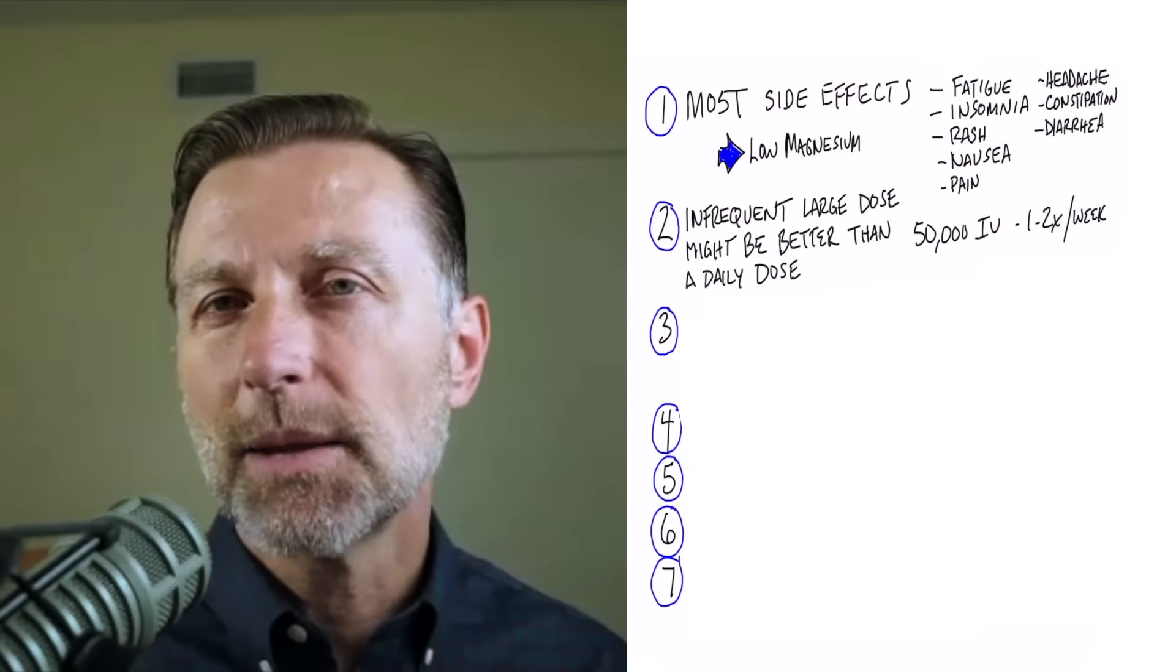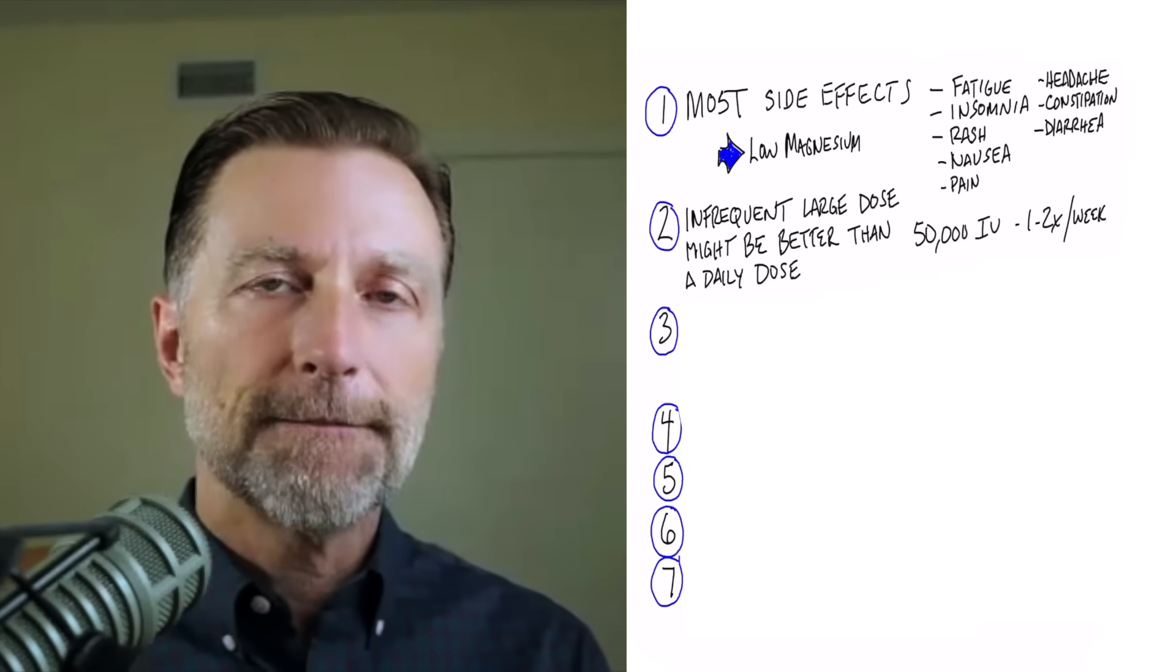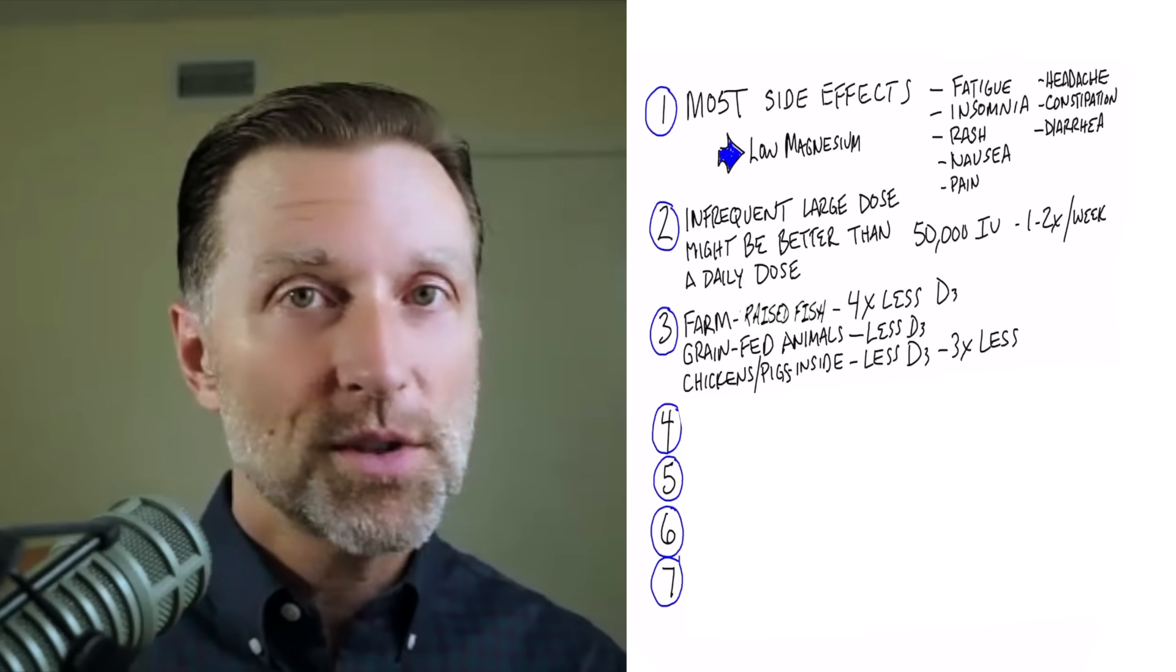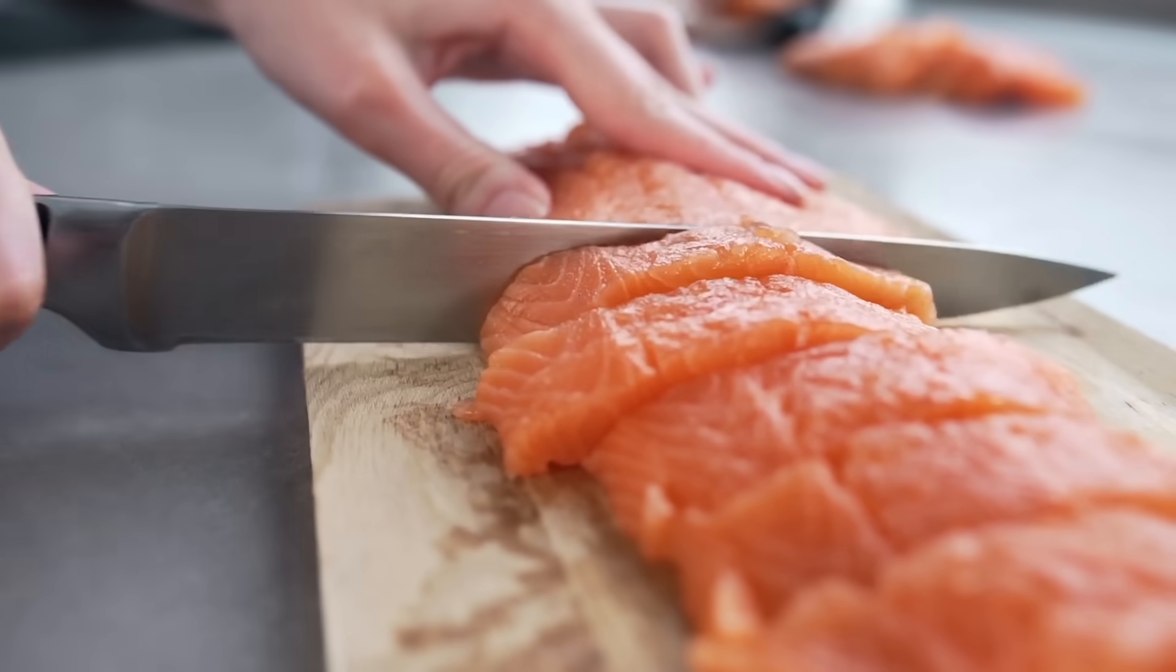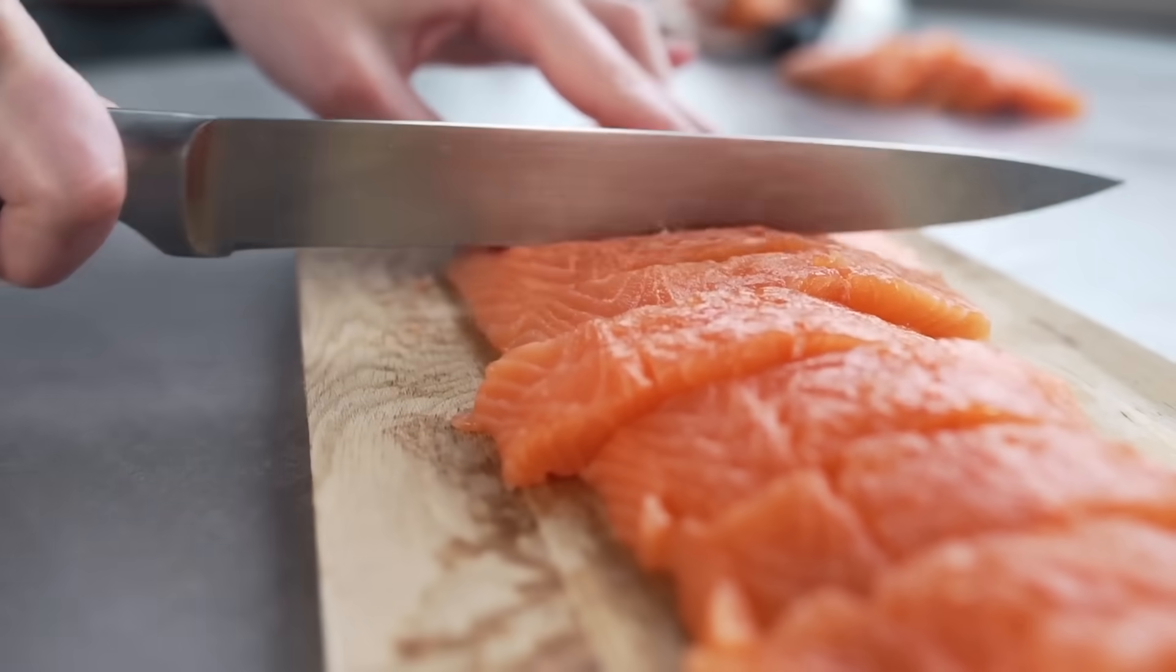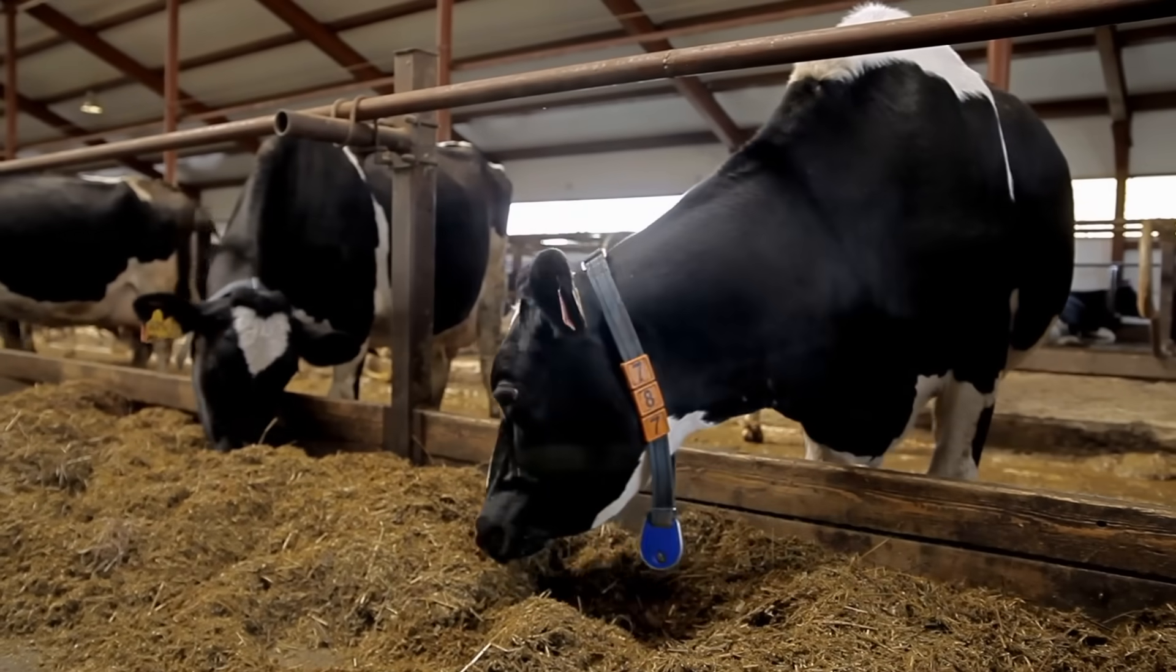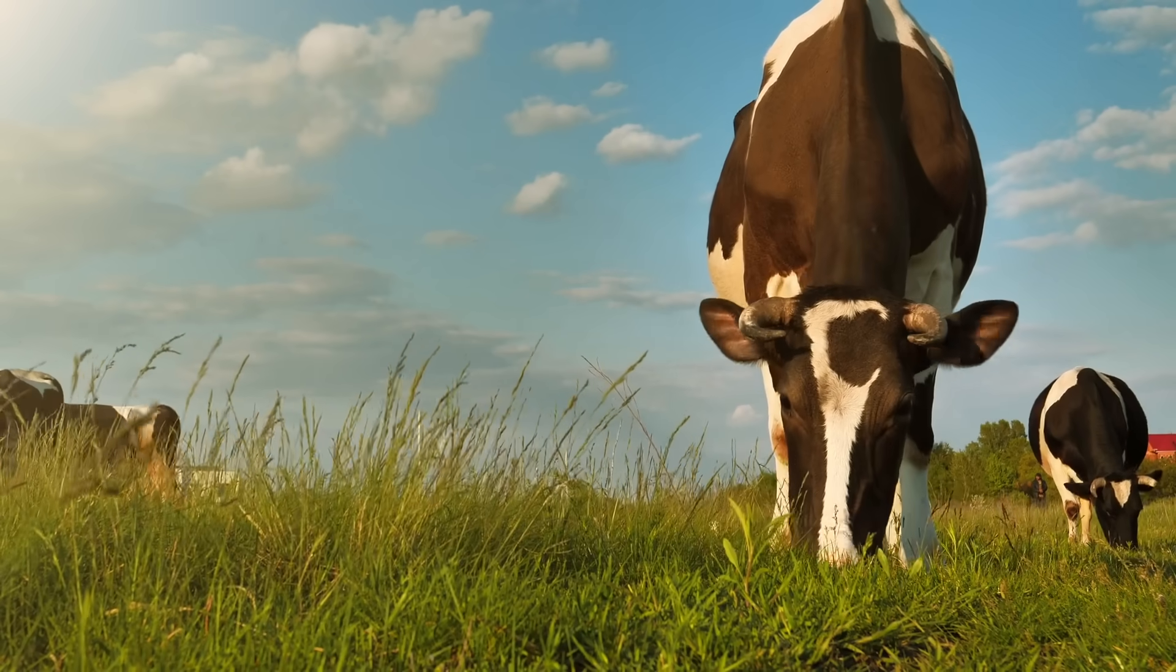The next thing that people don't realize is this: when you consume farm-raised fish, which is so common in restaurants, farm-raised fish has four times less vitamin D than wild-caught fish. Grain-fed animals compared to grass-fed animals have much less vitamin D.